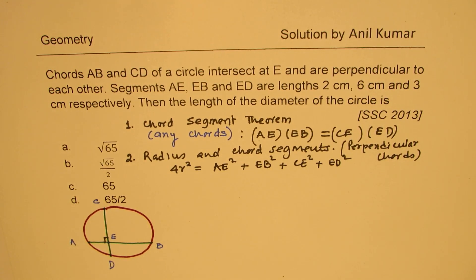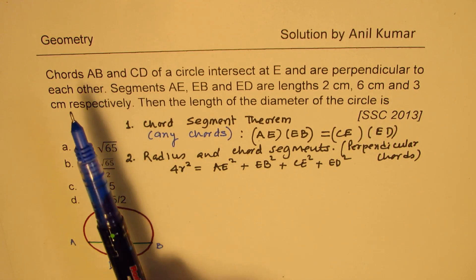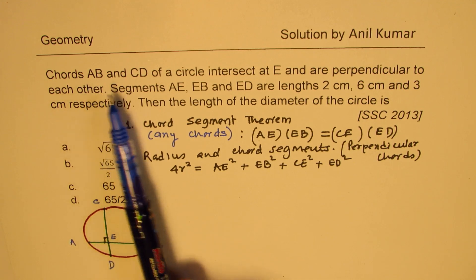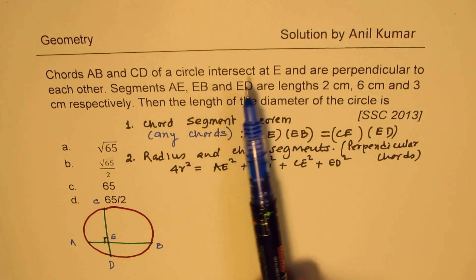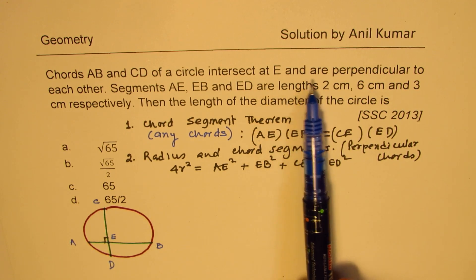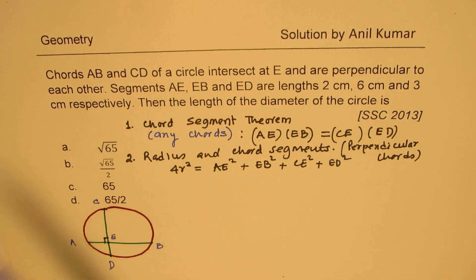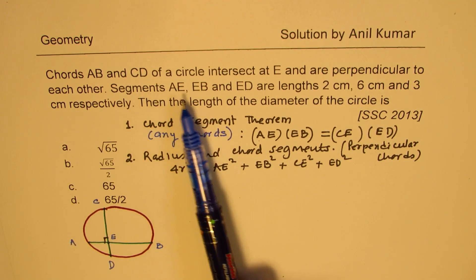So these are the two formulas which are widely used. Very standard. And you are expected to apply these formulas when you answer such multiple choice questions in your test paper. Now let's go through this and understand what is given. AB and CD, the chords AB and CD of a circle intersect at E and are perpendicular to each other. So we can apply this formula also.